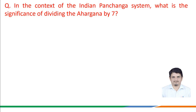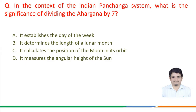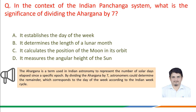The next question is: in the context of the Indian Panchanga system, what is the significance of dividing the Ahargana by 7? Option a) it establishes the day of the week, option b) it determines the length of the lunar month, option c) it calculates the position of the moon in its orbit, option d) it measures the angular height of the sun.